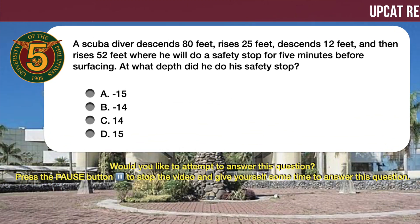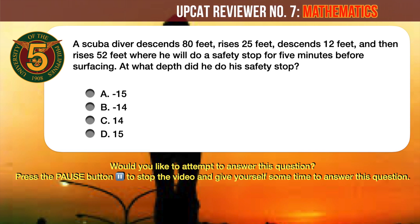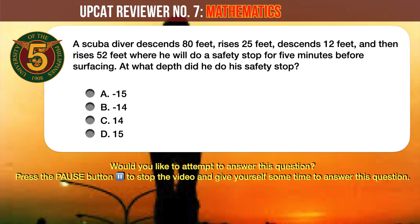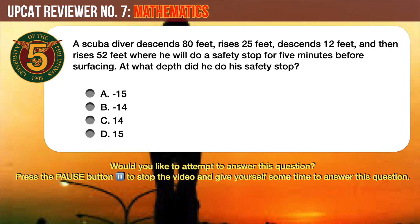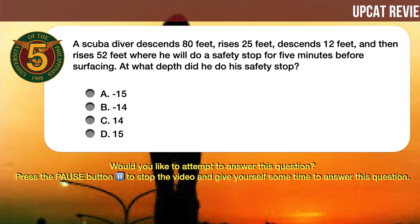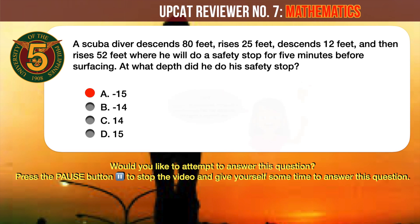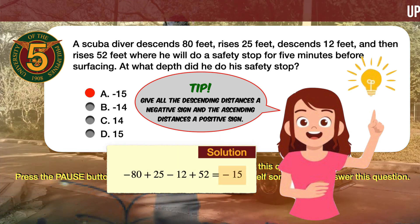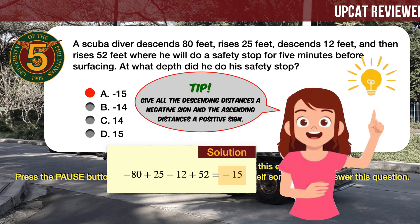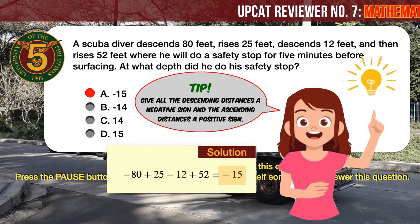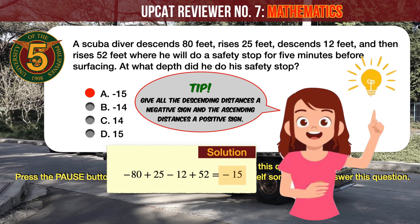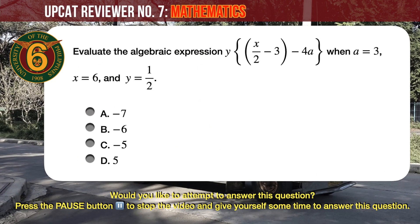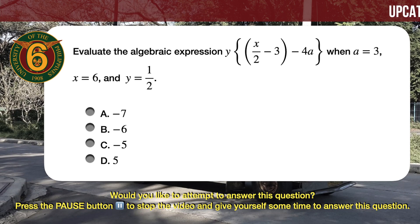Question number 5. A scuba diver descends 80 feet, rises 25 feet, descends 12 feet, and then rises 52 feet, where he will do a safety stop for five minutes before surfacing. At what depth did he do his safety stop? A: minus 15 feet. B: minus 14 feet. C: 14 feet. D: 15 feet. The correct answer is A, minus 15 feet. Give descending distances a negative sign and ascending distances a positive sign: minus 80 plus 25 minus 12 plus 52 equals minus 15 feet.